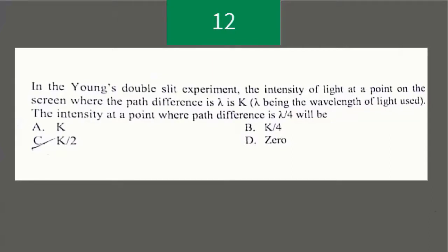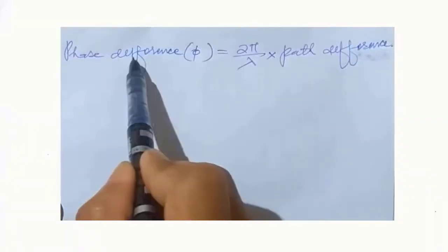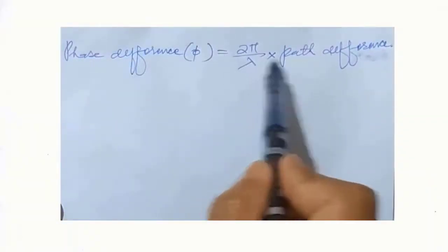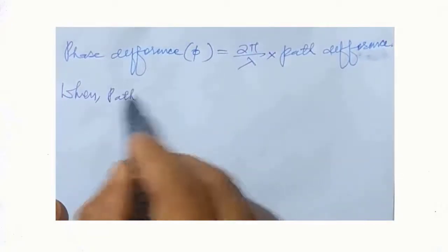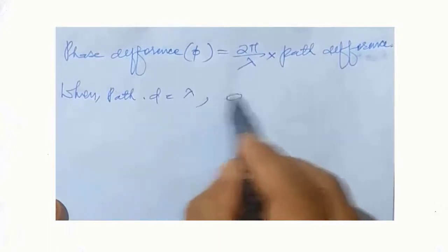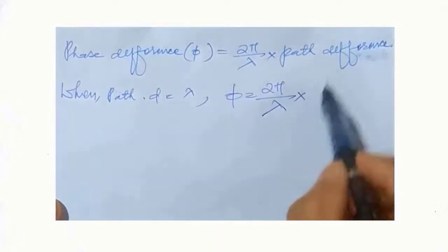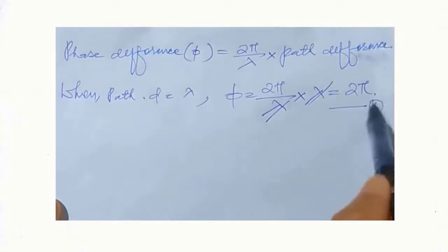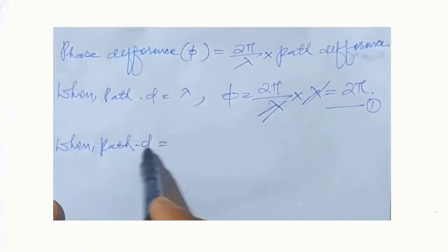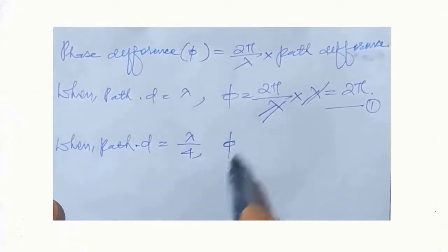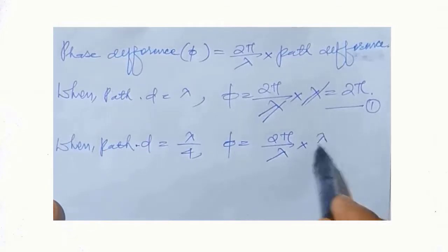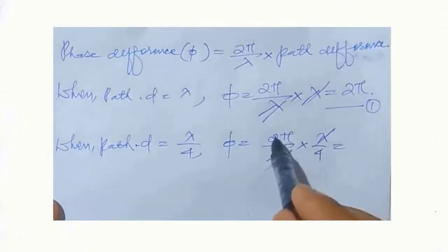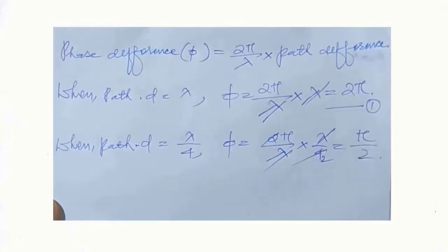In Young's double slit experiment, the intensity of light at a point where the path difference is lambda is K. We have to find the intensity where the path difference is lambda/4. From the definition, phase difference phi equals (2π/lambda) times path difference. When path difference is lambda, phase difference equals 2π. When path difference is lambda/4, phase difference equals (2π/lambda) times (lambda/4), which equals π/2.